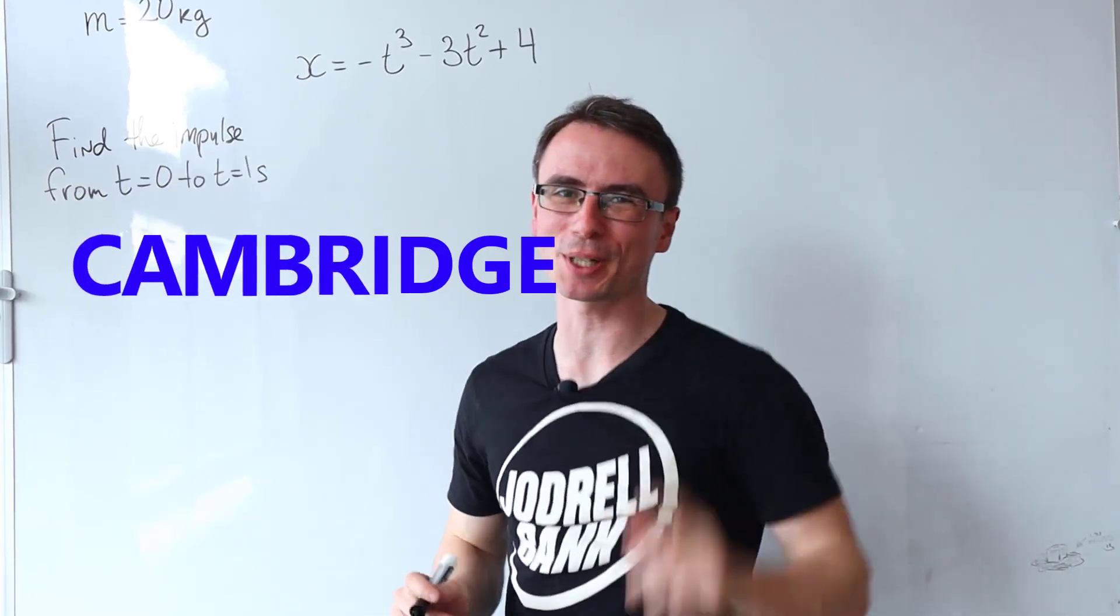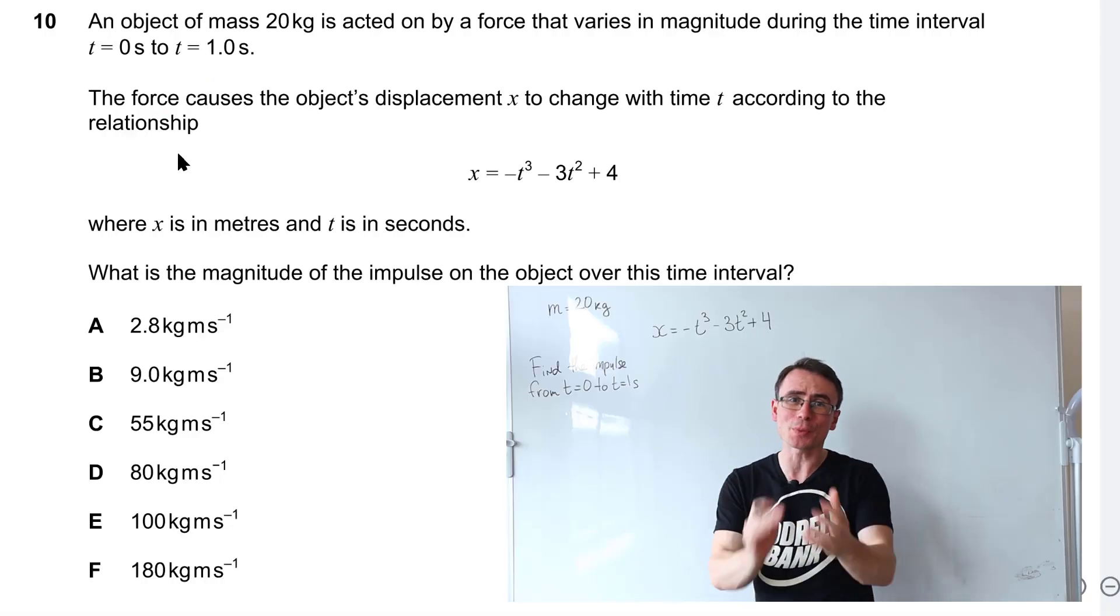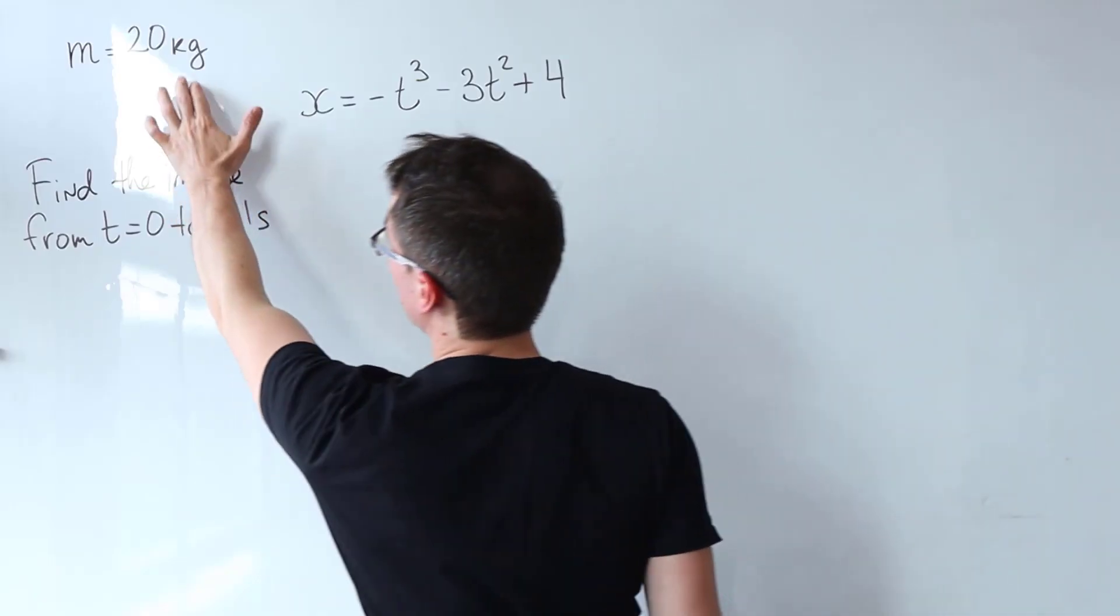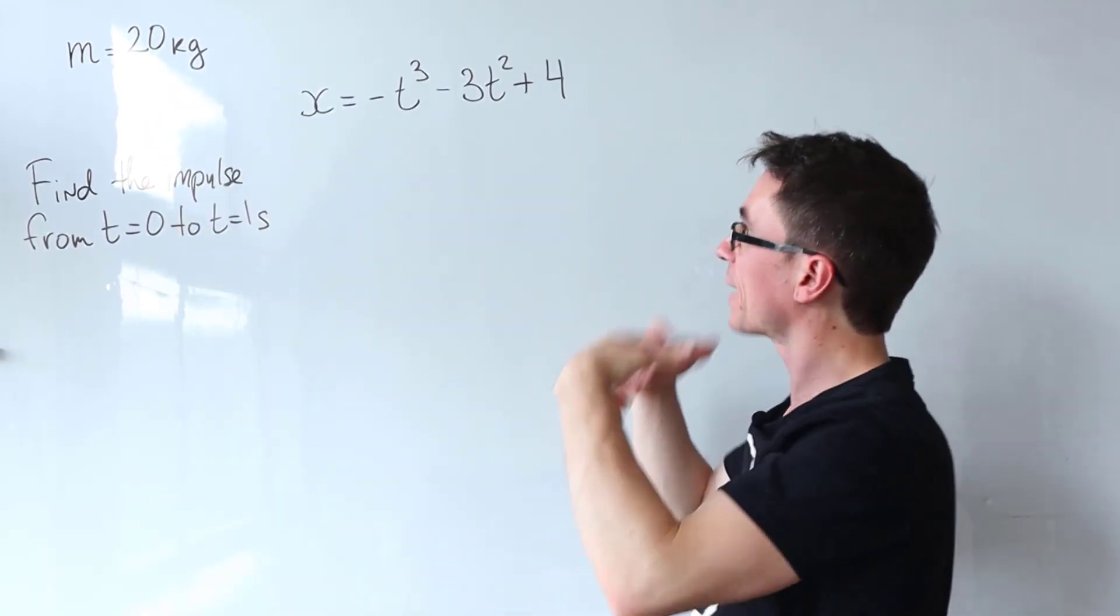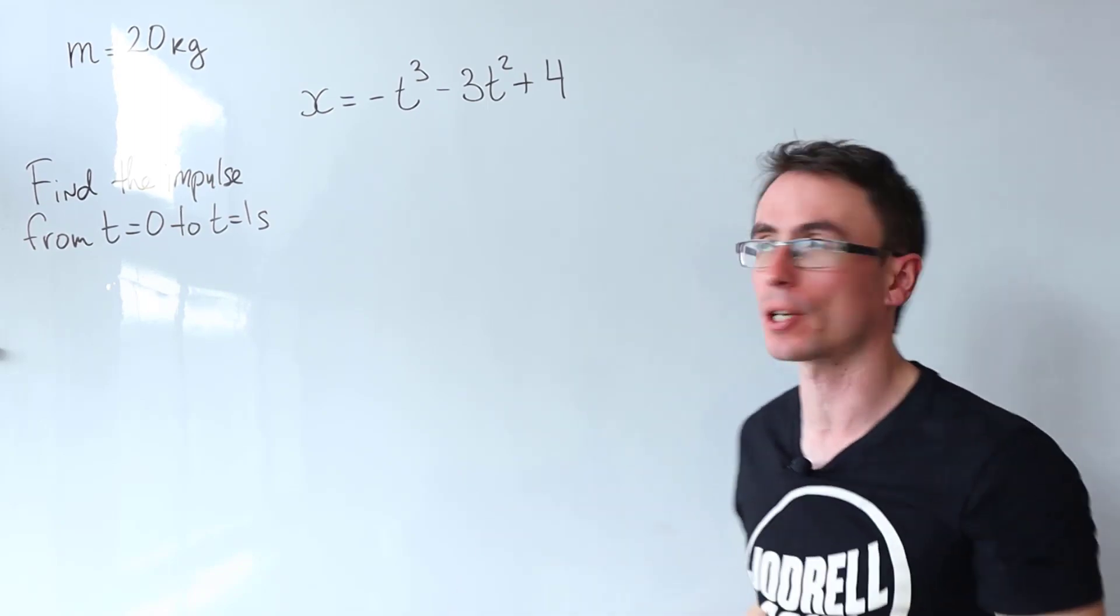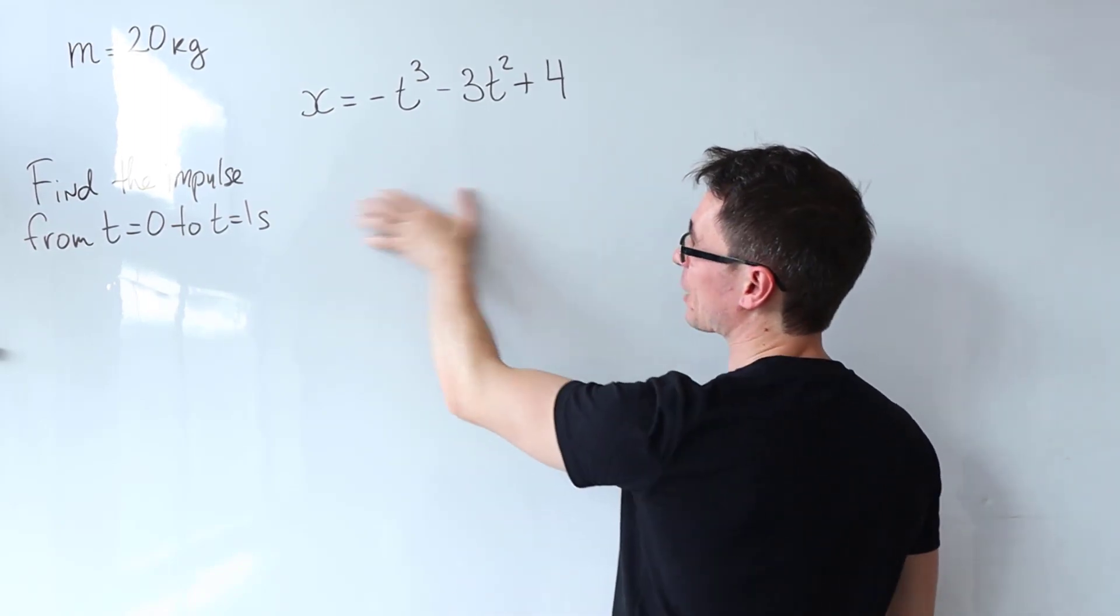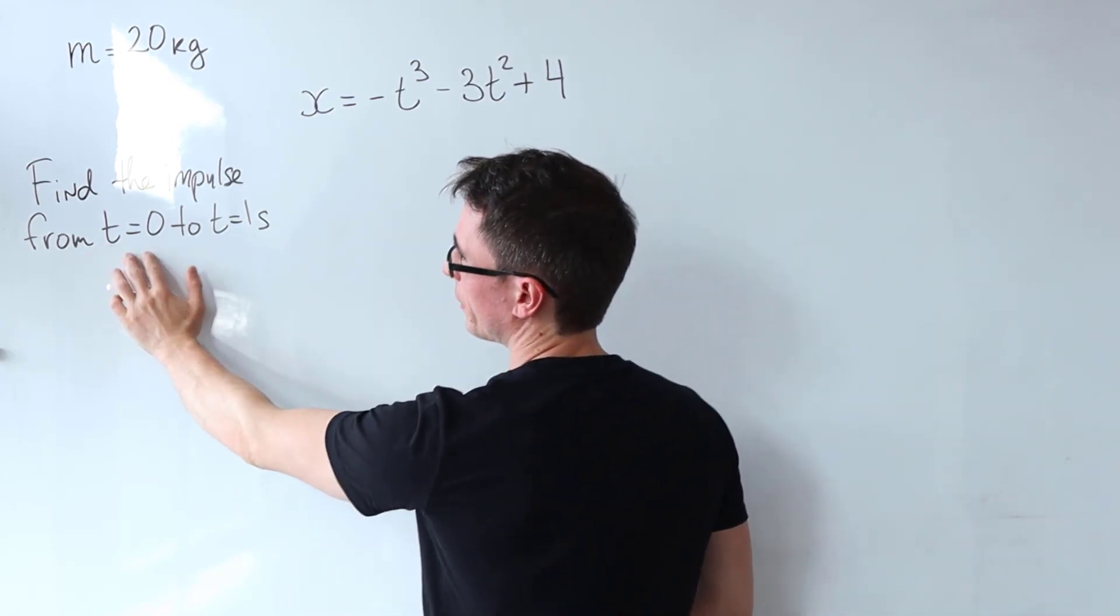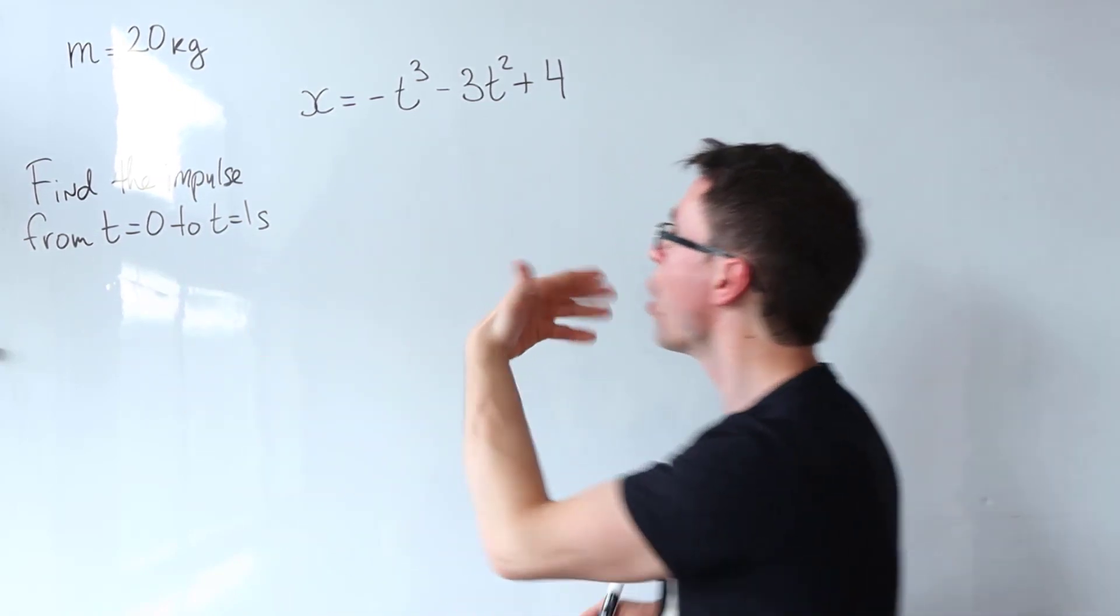Let's solve an impulsive Cambridge physics problem. This is a question from the 2022 Enger exam. We're given an object with a mass of 20 kilograms and a variable force acting on it. The displacement is given by the following expression and what we need to find out is the magnitude of the impulse from t equals zero to t equals one.